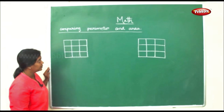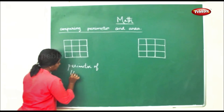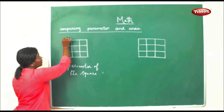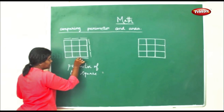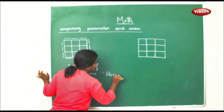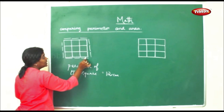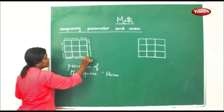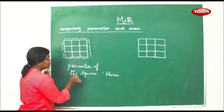Now we shall compare perimeter and area. First, perimeter of the square — perimeter is just like a walk around the boundary. I'll walk around from here: one, two, three, four, five, six, seven, eight, nine, ten, eleven, twelve. So the perimeter of the square is 12 centimeters. We just measure the boundary line alone.